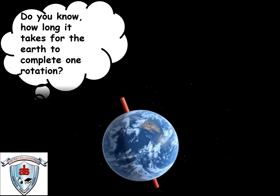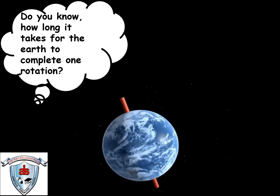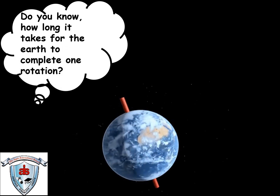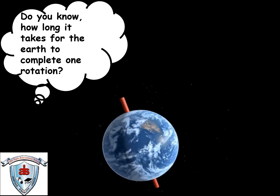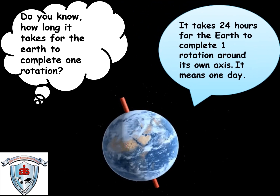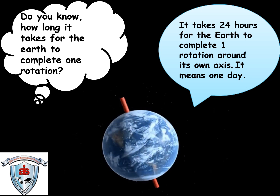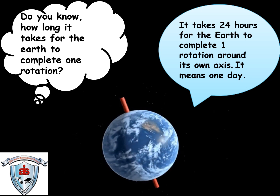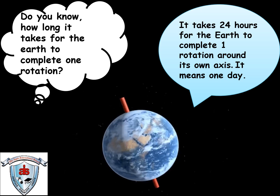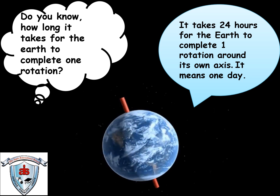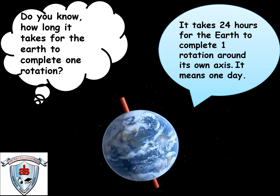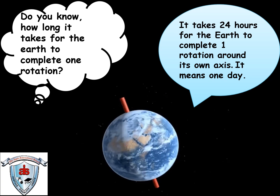Do you know how long it takes for the earth to complete one rotation, children? Do you remember it? It takes 24 hours for the earth to complete one rotation around its own axis. That means one day — 24 hours means one day.